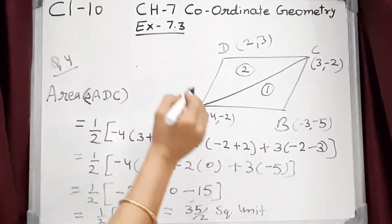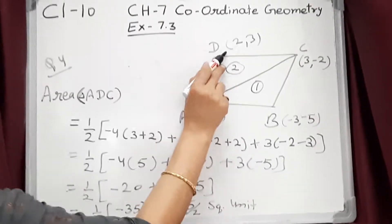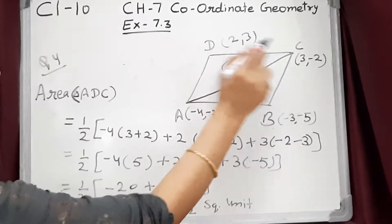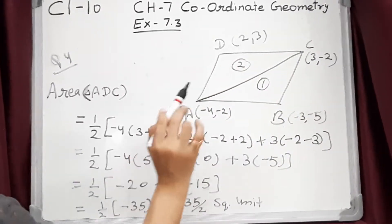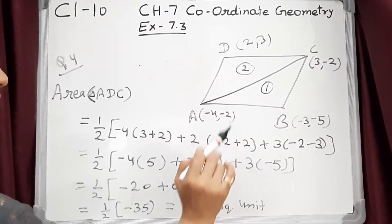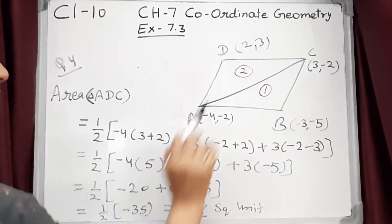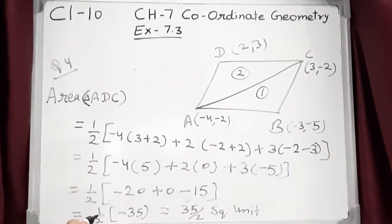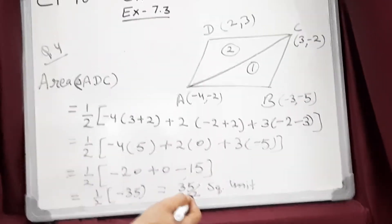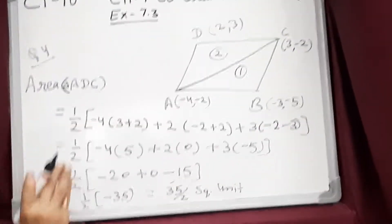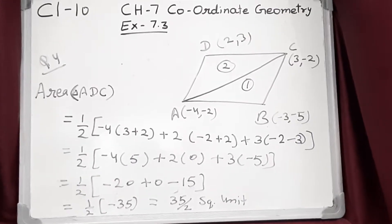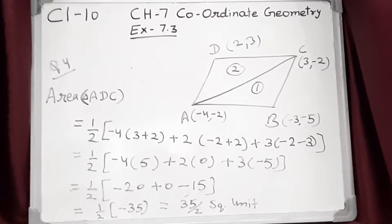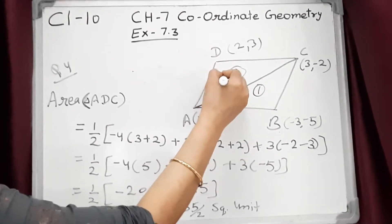Now find the area of the second triangle ACD. Using the same formula: half into x₁(y₂ − y₃) + x₂(y₃ − y₁) + x₃(y₁ − y₂), after solving we get −35 upon 2. This equals 35 upon 2, because area is always taken as a positive value — area cannot be negative. So this area is 35/2 square units.